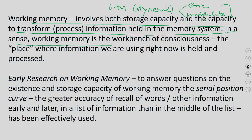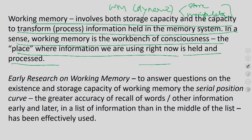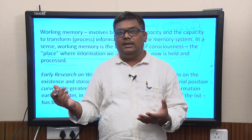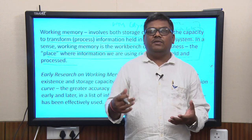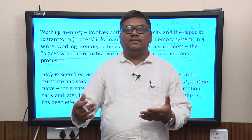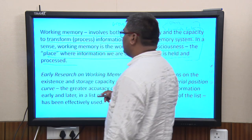Working memory is the workbench of consciousness — the place where information we are using right now is held and processed. Not only numbers, but any kind of information to which meaning is assigned goes through working memory, which can pull rules from long-term memory. This dynamicity — the ability to refer to long-term memory — makes it different from the short-term store.